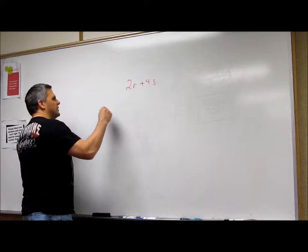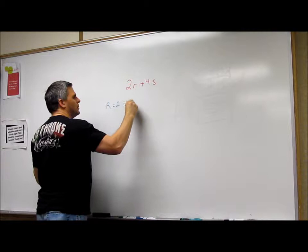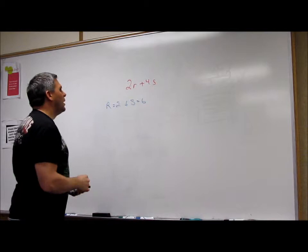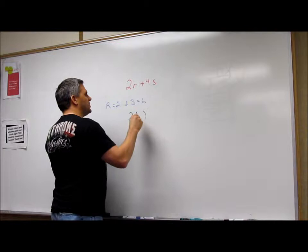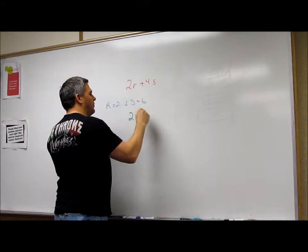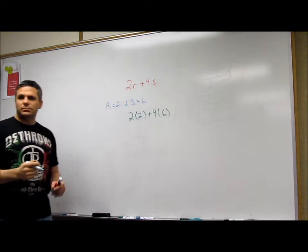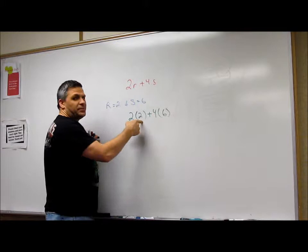In the first one, they say R is 2 and S is 6. And so what you want to do there is plug them in. That's all. So what that means is you take 2 times R, which is 2, and 2 plus 4 times S, which is 6. And then do the math.